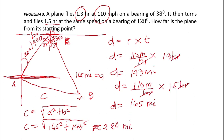The answer is 220 miles. Take note: zero is not considered a significant figure here based on the rules of significant figures in trigonometry. So 220 miles is expressed in two significant figures. That is all about problem number three.